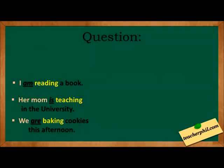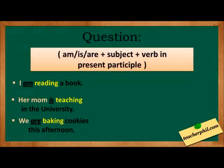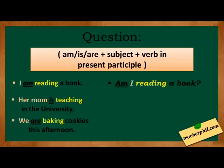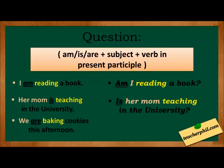For the question form, we simply follow the pattern: am, is, or are, plus subject, plus verb in present participle. Examples: I am reading a book → Am I reading a book? Her mom is teaching in the university → Is her mom teaching in the university? We are baking cookies this afternoon → Are we baking cookies this afternoon?